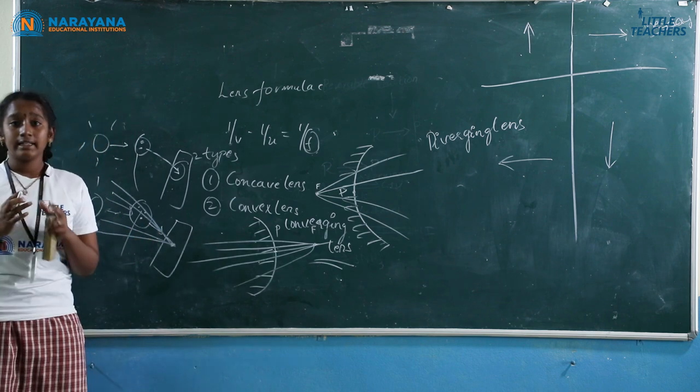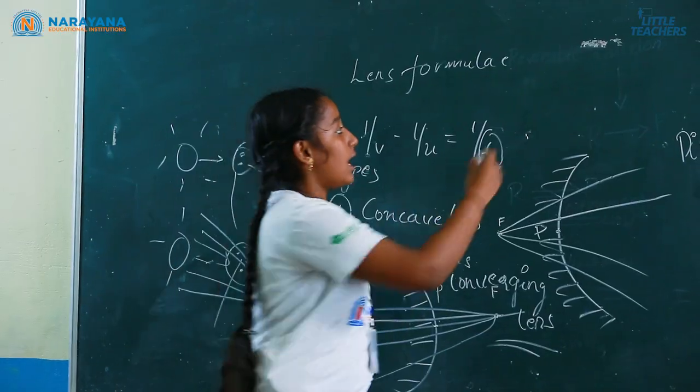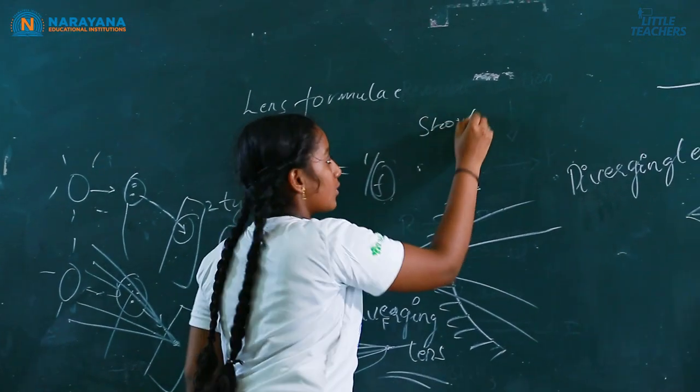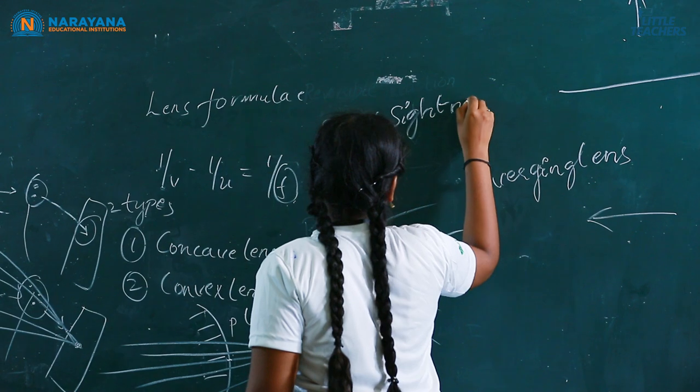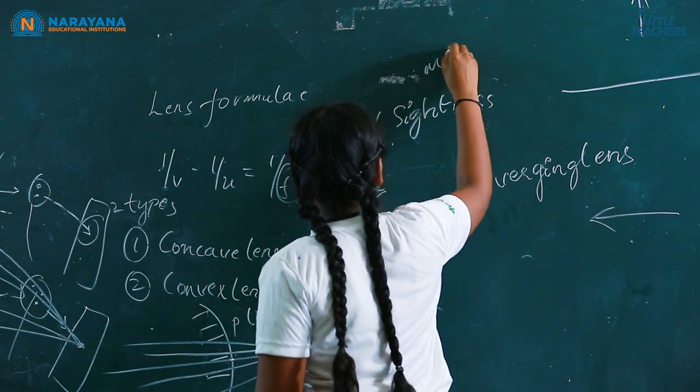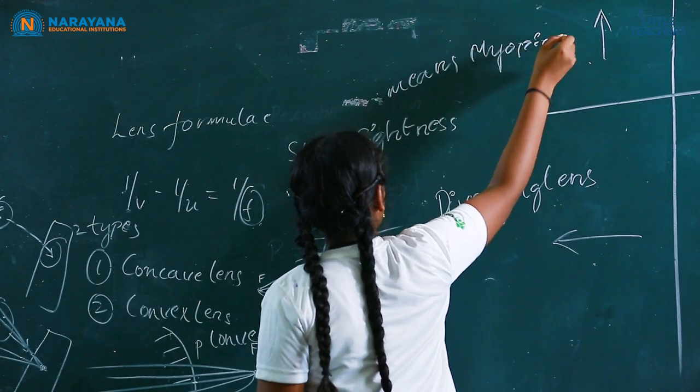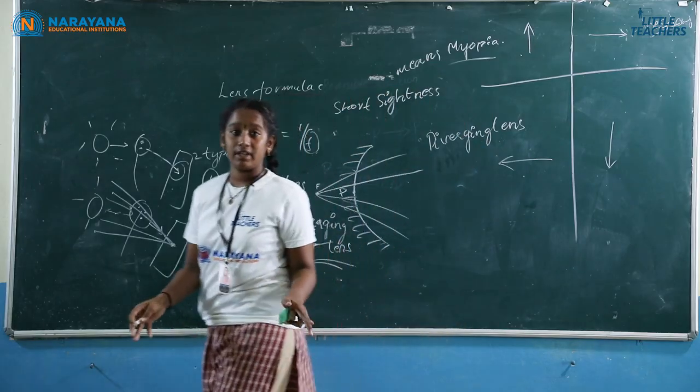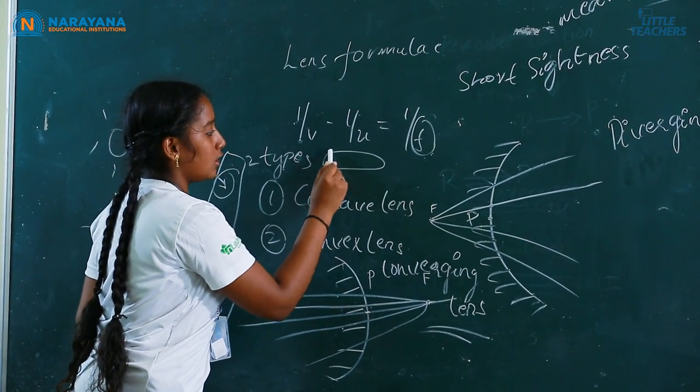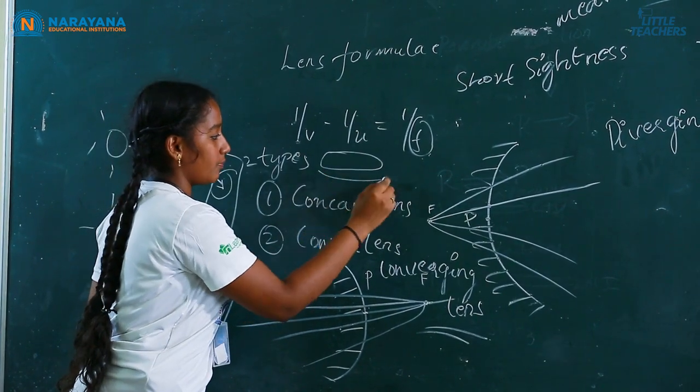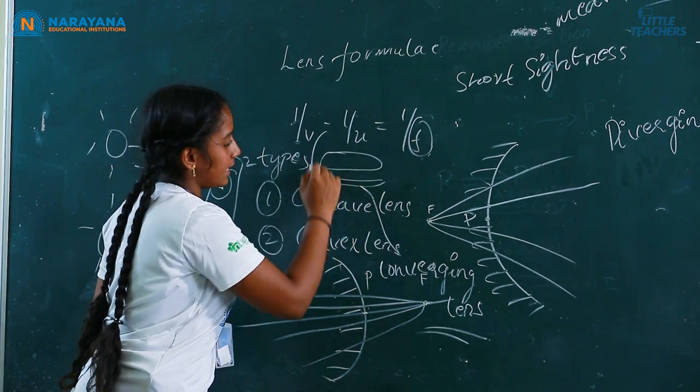In our eye there is a biconvex lens. To avoid that short-sightedness means myopia, we will use a concave lens because this is a biconvex lens and we can conclude this is an eye.